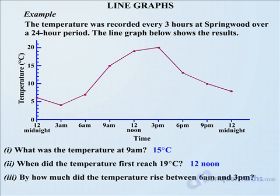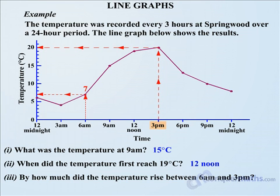A third question: by how much did the temperature rise between 6am and 3pm? Let's find out what the temperature was firstly at 6am — reading up then across, 7 degrees. Then at 3pm, reading up and across, we can see 20 degrees. It started at 7 and rose to 20, so that is a rise of 13 degrees Celsius.